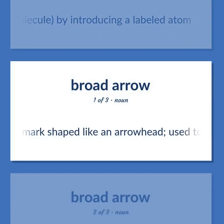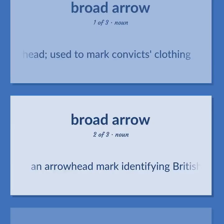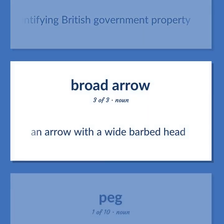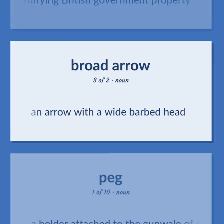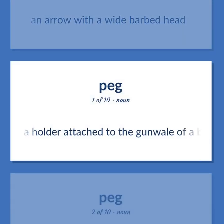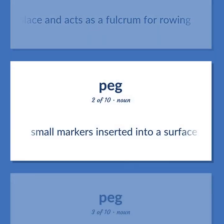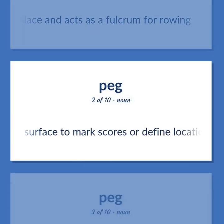Peg: a mark shaped like an arrowhead, used to mark convict's clothing. An arrowhead mark identifying British government property. An arrow with a wide barbed head. A holder attached to the gunwale of a boat that holds the oar in place and acts as a fulcrum for rowing. Small markers inserted into a surface to mark scores or define locations.